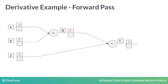Let's make things concrete with an example. We have three variables x, y, and z, having values minus 3, 5, and minus 2. First we add x and y in variable q, which is minus 3 plus 5 equals 2. Then we multiply z with q, giving us minus 4.